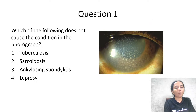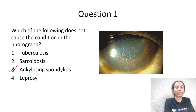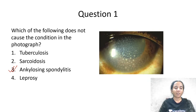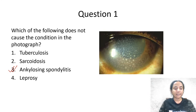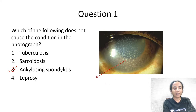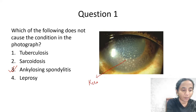The correct answer here is ankylosing spondylitis. Now, what is this image about? We can see these white-white dots on the corneal endothelium. What are they called? These white-white dots on the corneal endothelium are called keratic precipitates.